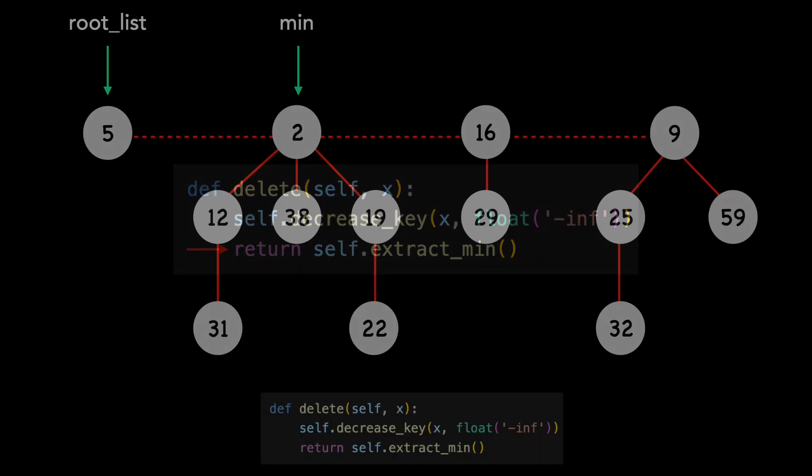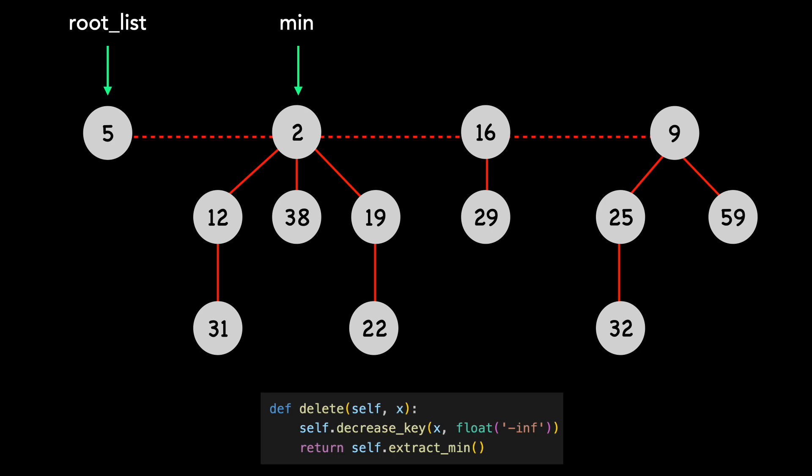Let's look at an example. We want to delete node 19, which I'll color blue. We first decrease the key to negative infinity.